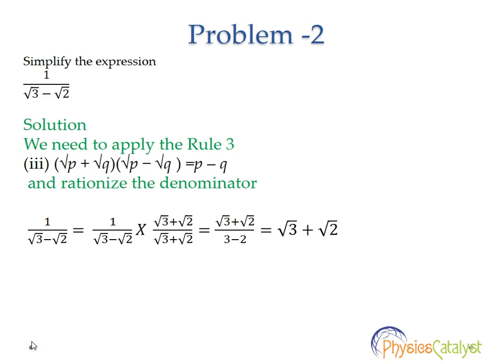So 1 divided by root 3 minus root 2 is equal to 1 divided by root 3 minus root 2 multiplied by root 3 plus root 2 divided by root 3 plus root 2. That equals root 3 plus root 2 divided by 3 minus 2.